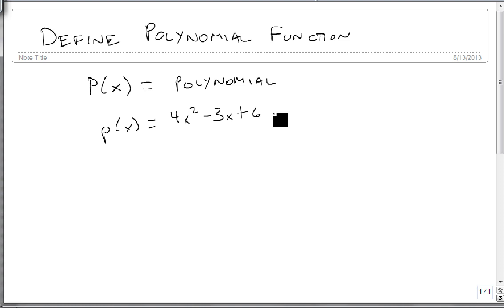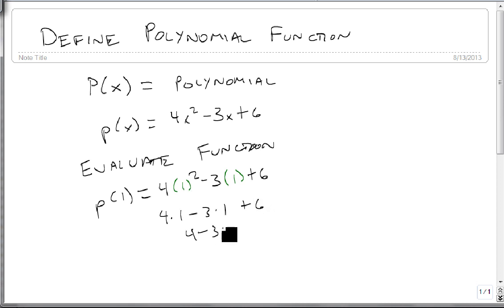Now let's evaluate this polynomial function. Suppose I ask for P(1). Wherever we see an x, we replace it with 1. That's the squared part of the original, minus 3 times 1—notice the parentheses; I find this helpful to keep track of the pieces. This becomes 4 times 1 squared is 1, minus 3 times 1 plus 6. We get 4 - 3 + 6 = 7, which means we have the input-output pair (1, 7).